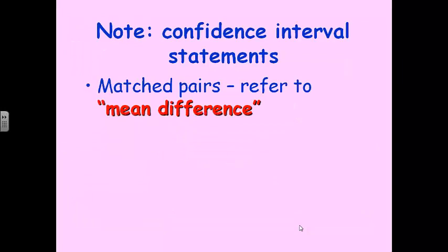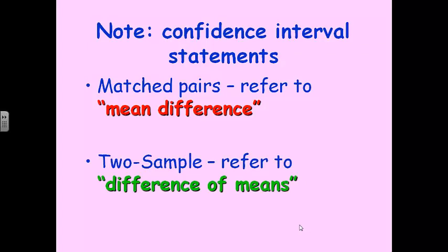Take note on confidence interval statements. Back in the last chapter we did matched pairs, and you were referring to a t-test for the mean difference. This time, in two samples, we're talking about the difference of means. These two things have caused quite a bit of confusion — people always get them mixed up. Remember in matched pairs, we subtracted each pair first and made a brand new difference list, then took the mean of that list. In this case, we take the mean of sample one and the mean of sample two and subtract those two means — that's where the phrasing comes from. If you say 'mean difference' but you're doing a two-sample, the grader will think you don't know what you're doing.